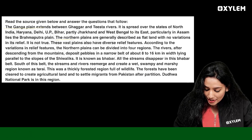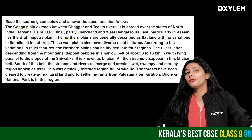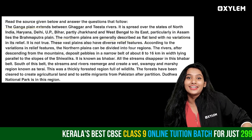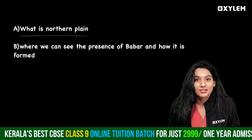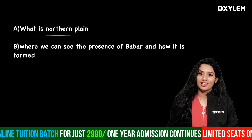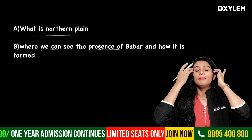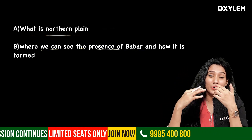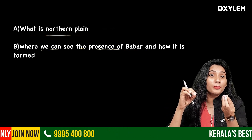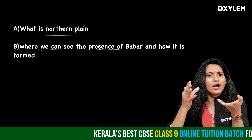The northern plains are generally described as flat land with no variations in their relief. The plains are mainly formed by the Indus, Ganga, and Brahmaputra rivers through the deposit of alluvial soil.